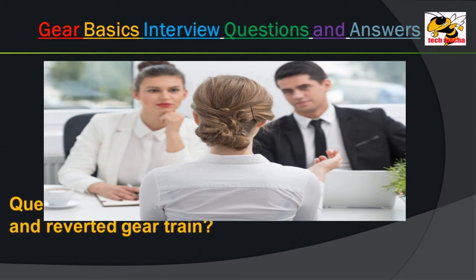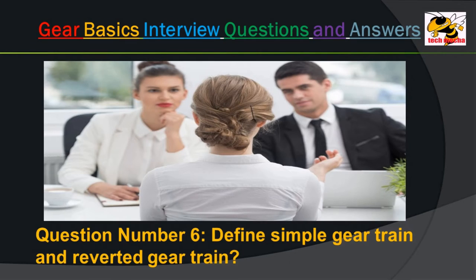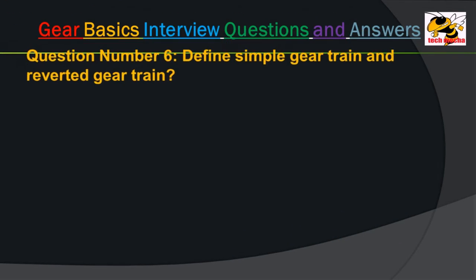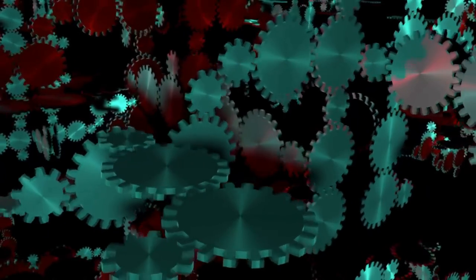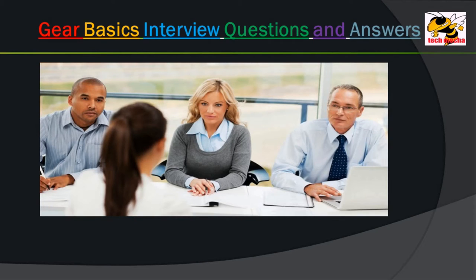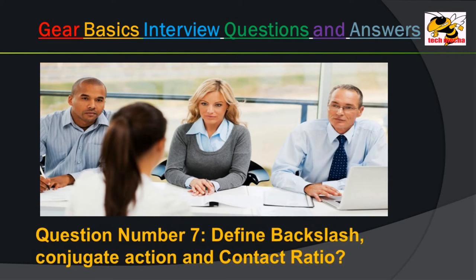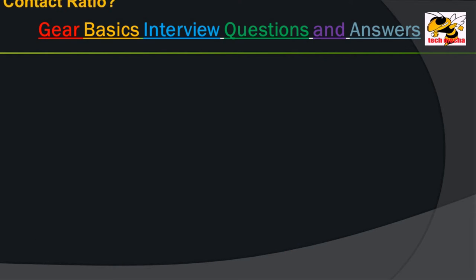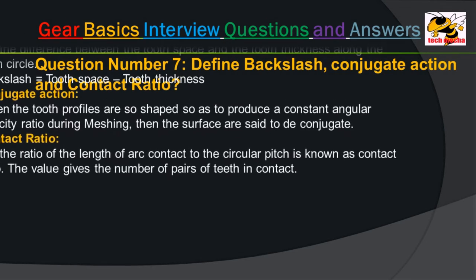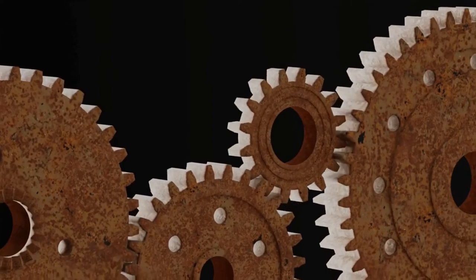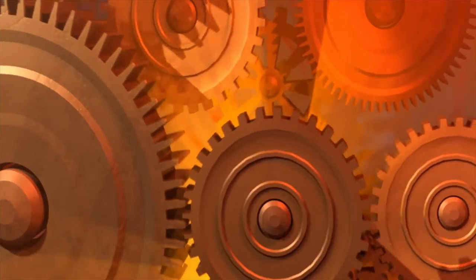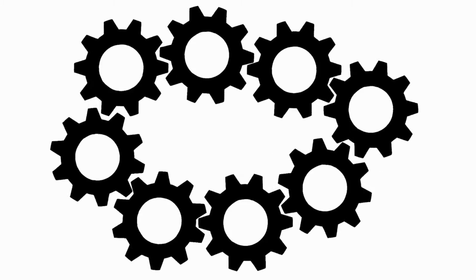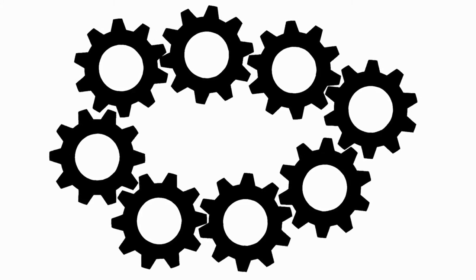Question number 6: Define simple gear train and reverted gear train. Answer: Simple gear train — when there is only one gear on each shaft, it is known as a simple gear train. Reverted gear train — when the axes of the first and last wheels are coaxial, the train is known as a reverted gear train. Question number 7: Define backlash, conjugate action, and contact ratio. Answer: Backlash — it is the difference between the tooth space and the tooth thickness along the pitch circle; backlash equals tooth space minus tooth thickness.